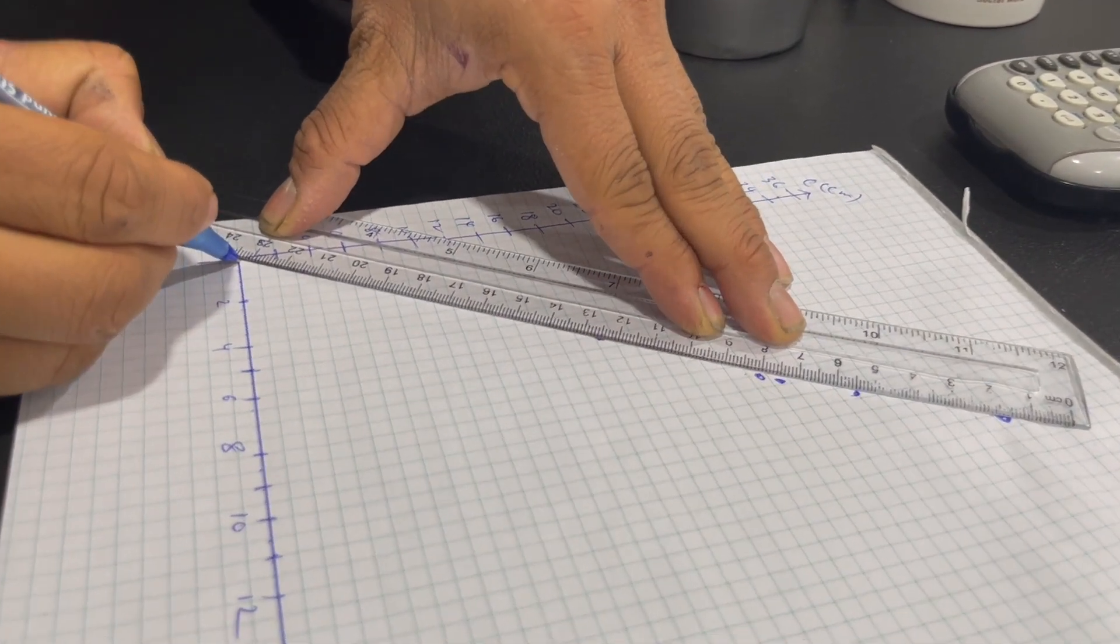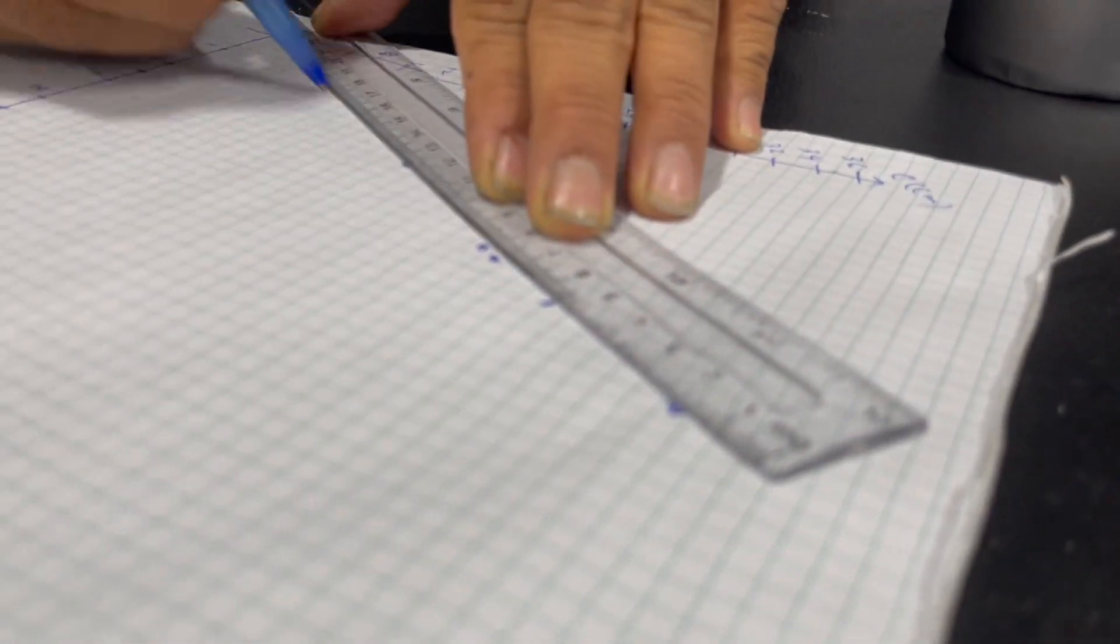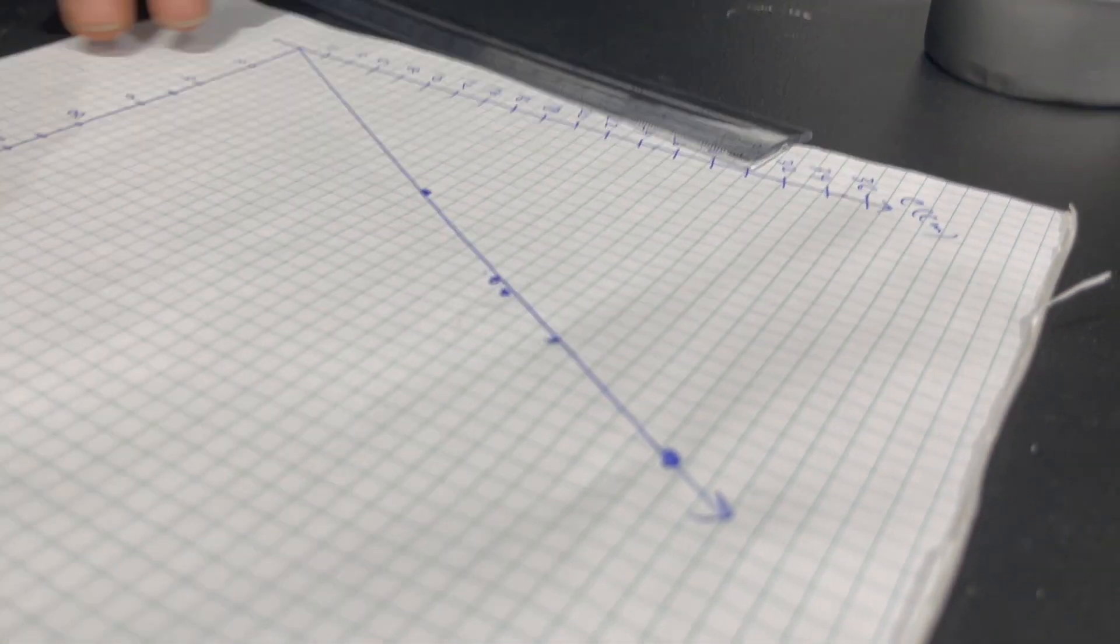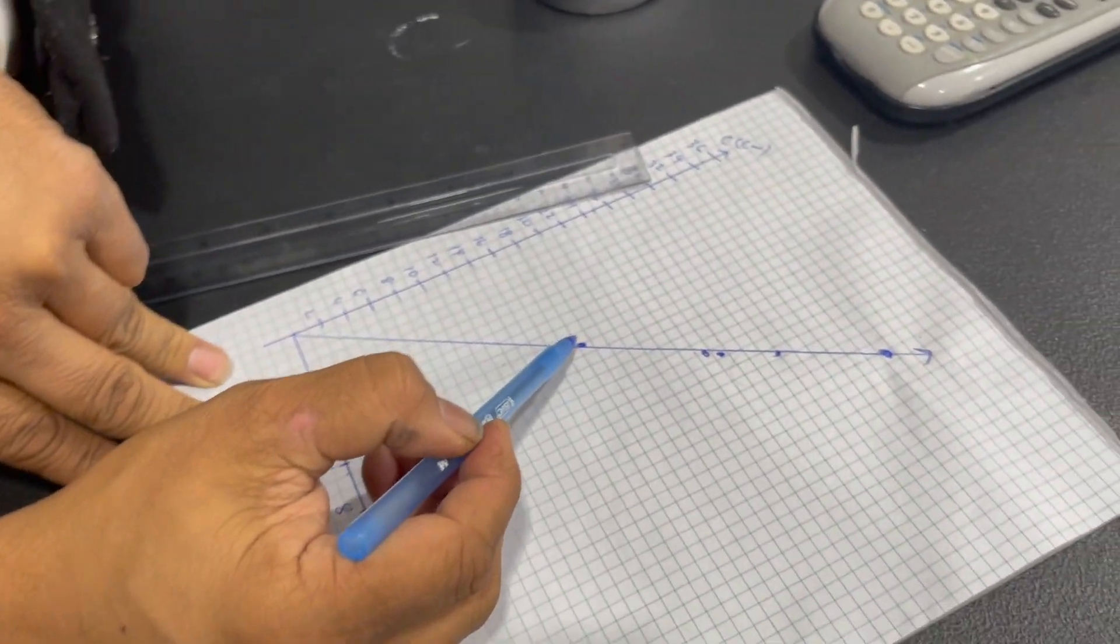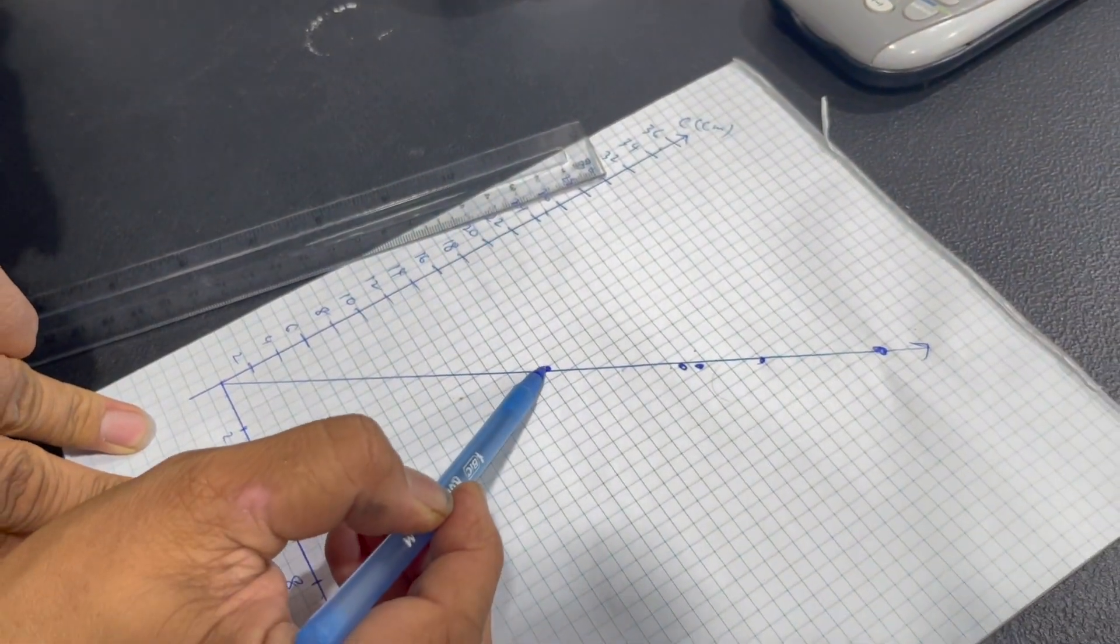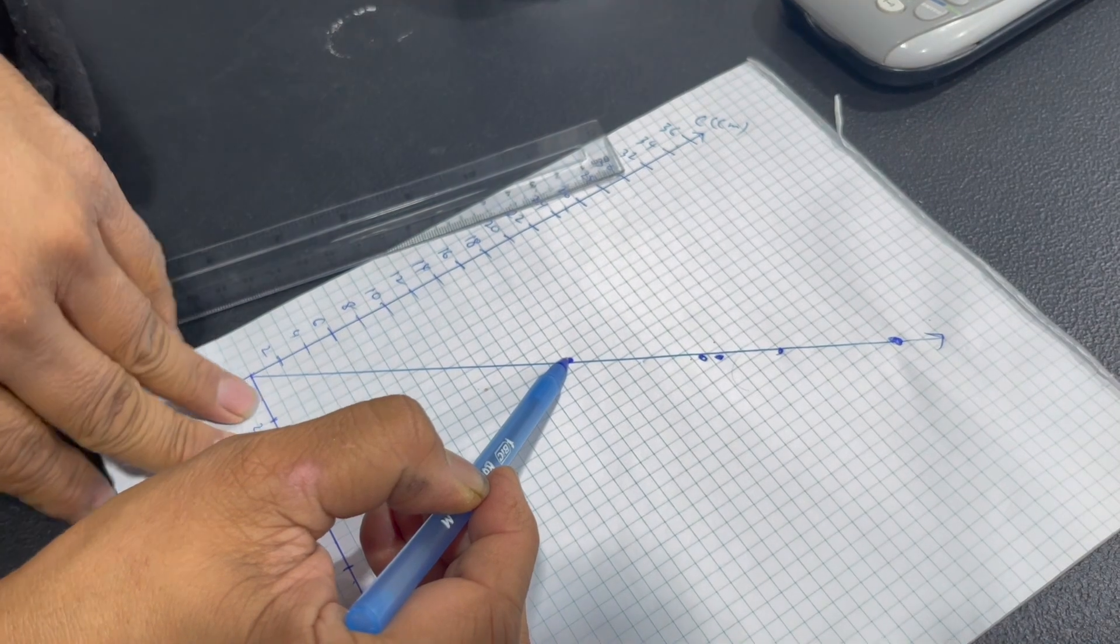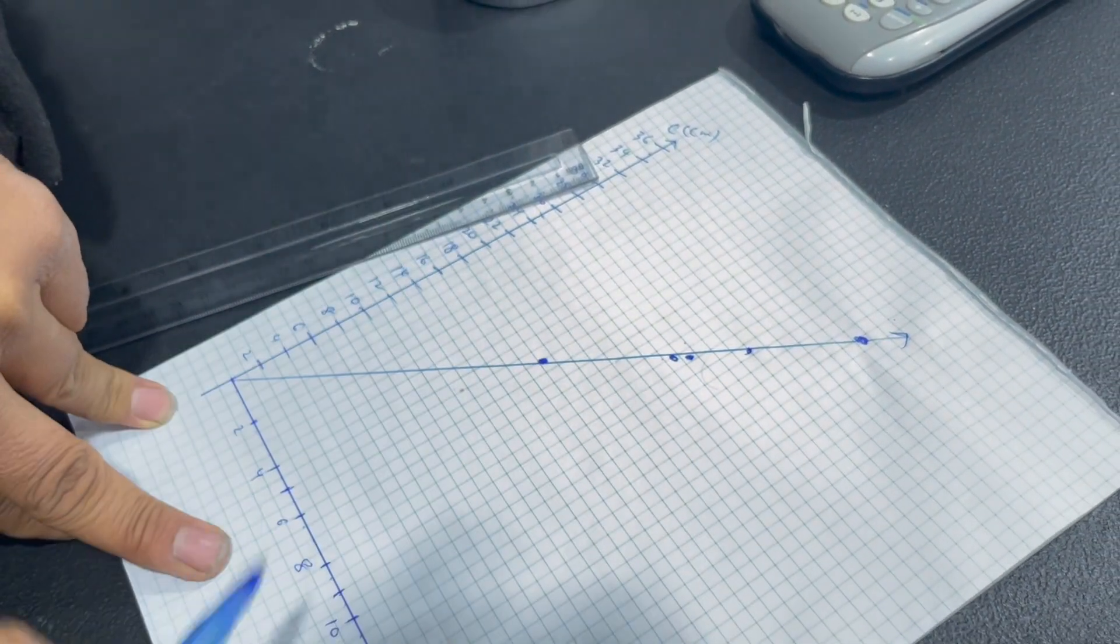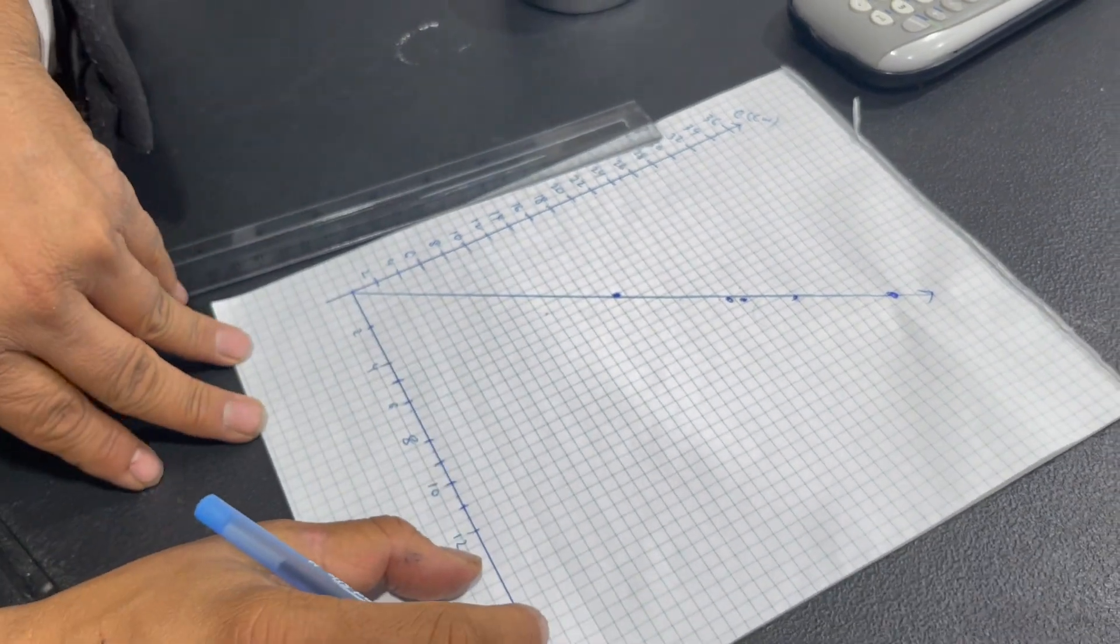So I have one point above the line. I have two point on the line. And I have one point below the line. So this is not too bad.